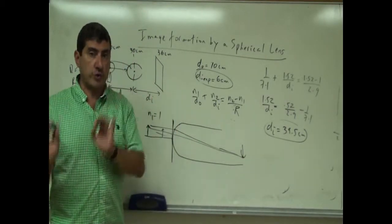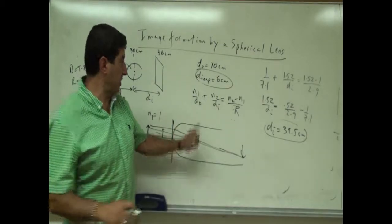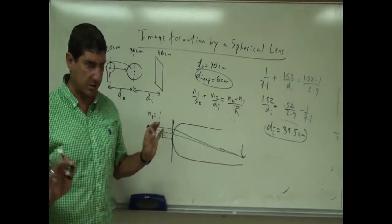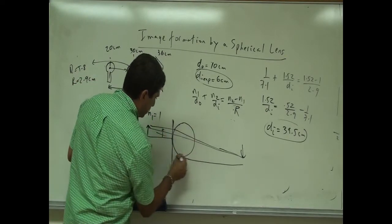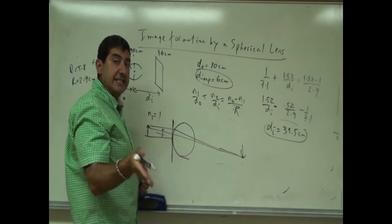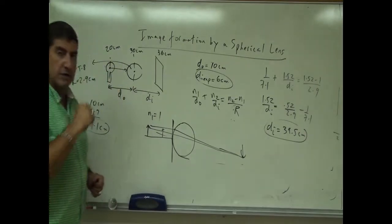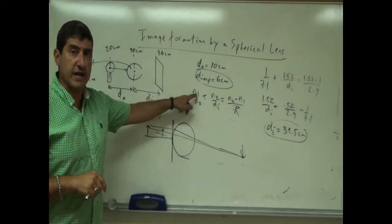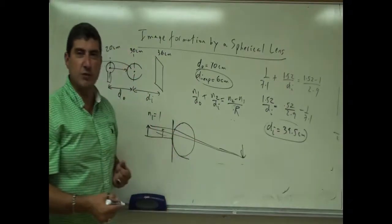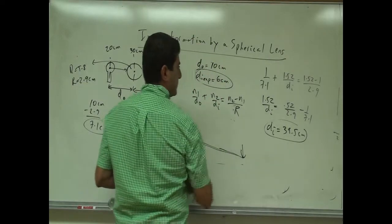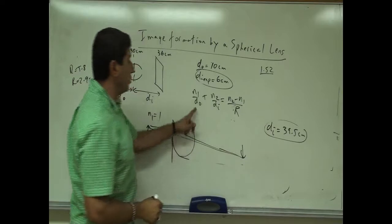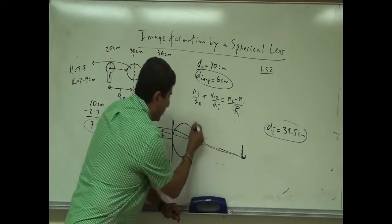There are many tricky things to get correct here. N1 is the index of refraction of the medium where that image would have formed — in glass — so N1 = 1.52. D-O is the distance from that image to the back side of the lens. The 39.5 is measured from the front, so I subtract the diameter: 39.5 − 5.8 = 33.7. But it's negative 33.7 because the image never actually formed — it acts as a virtual object for the back side of the lens.